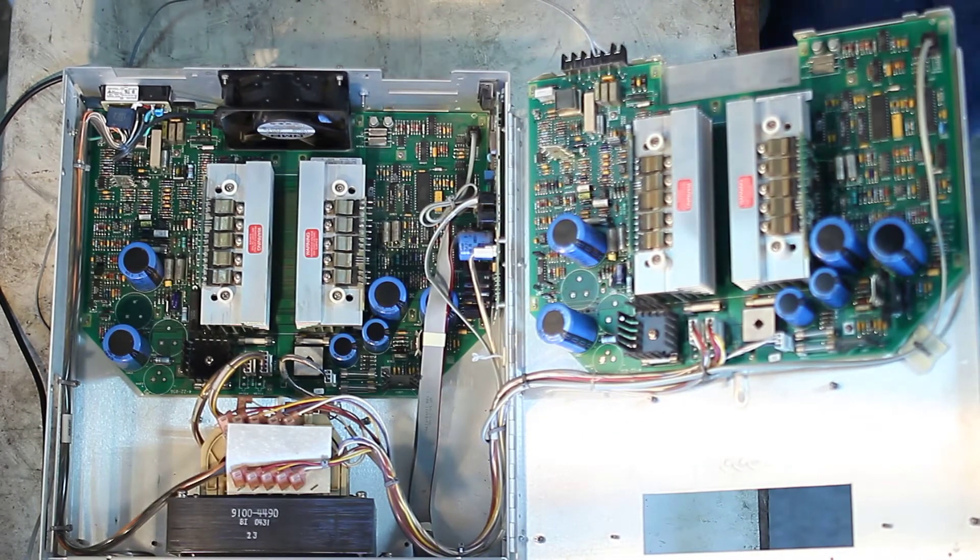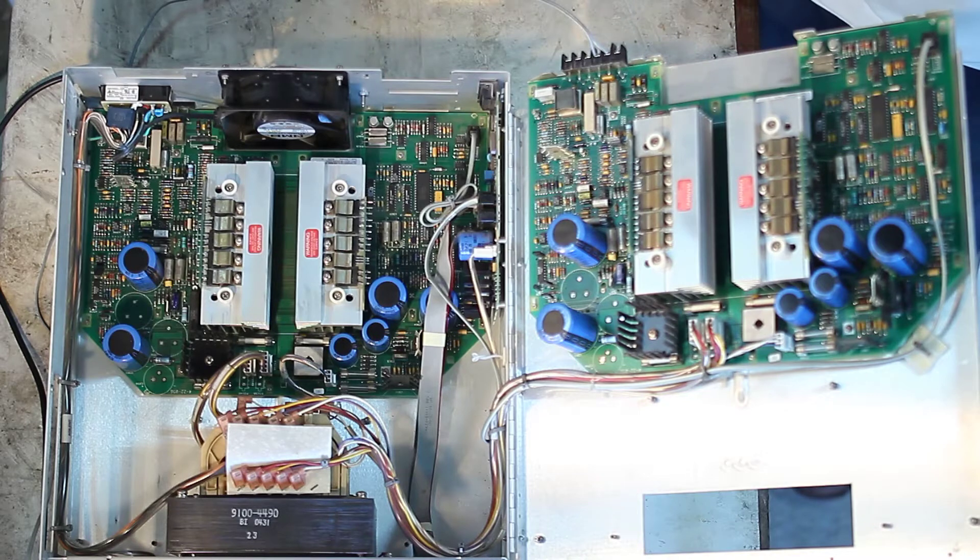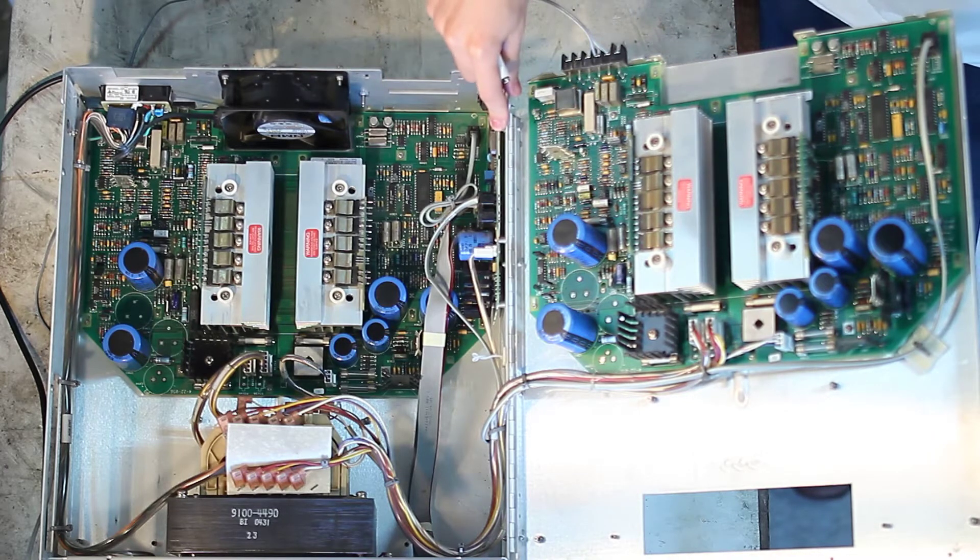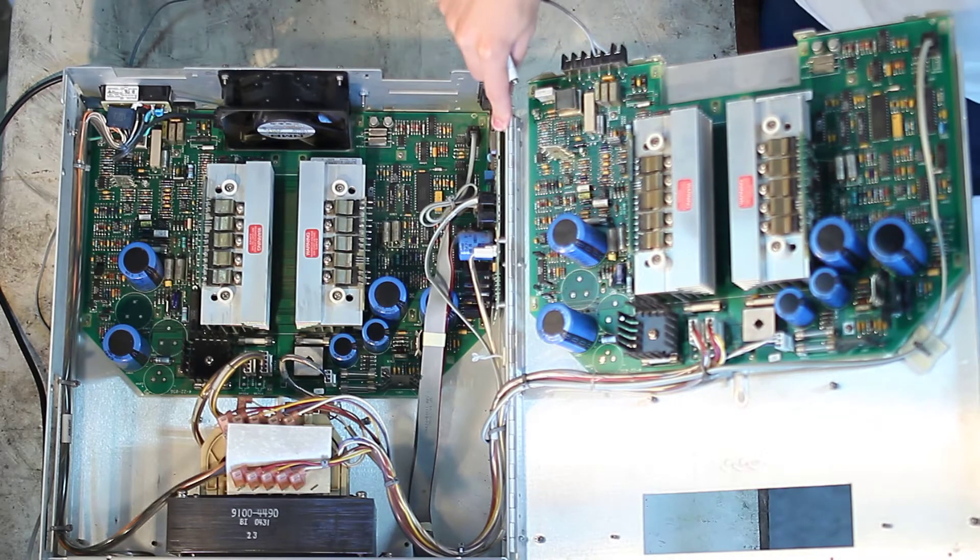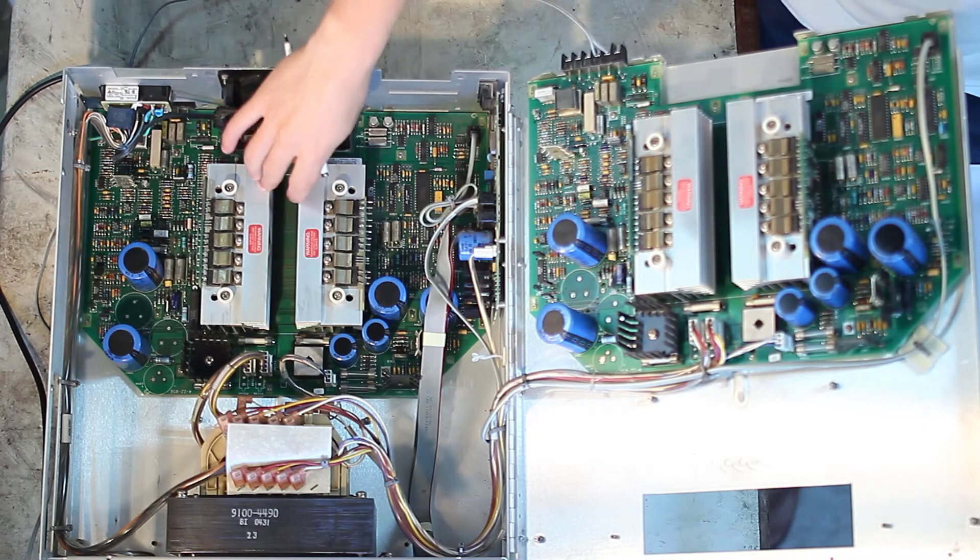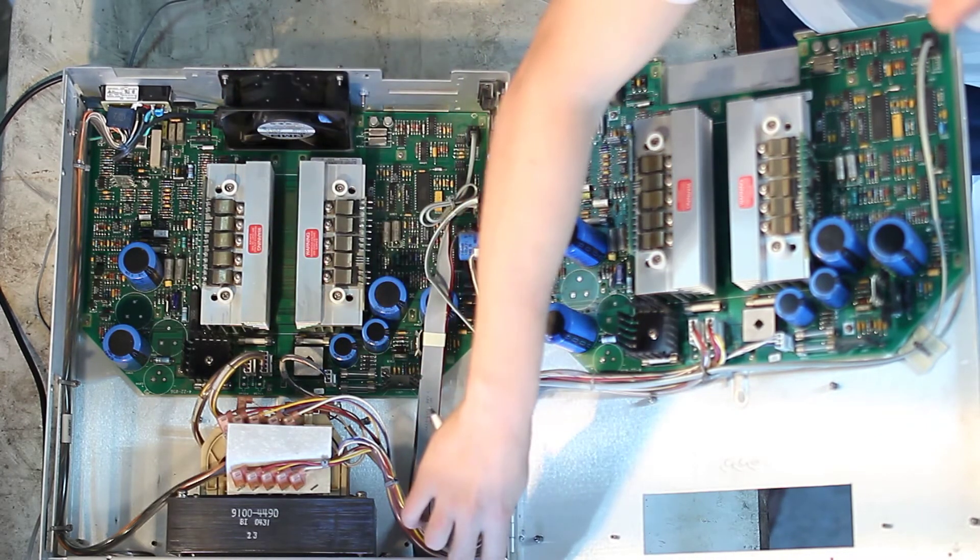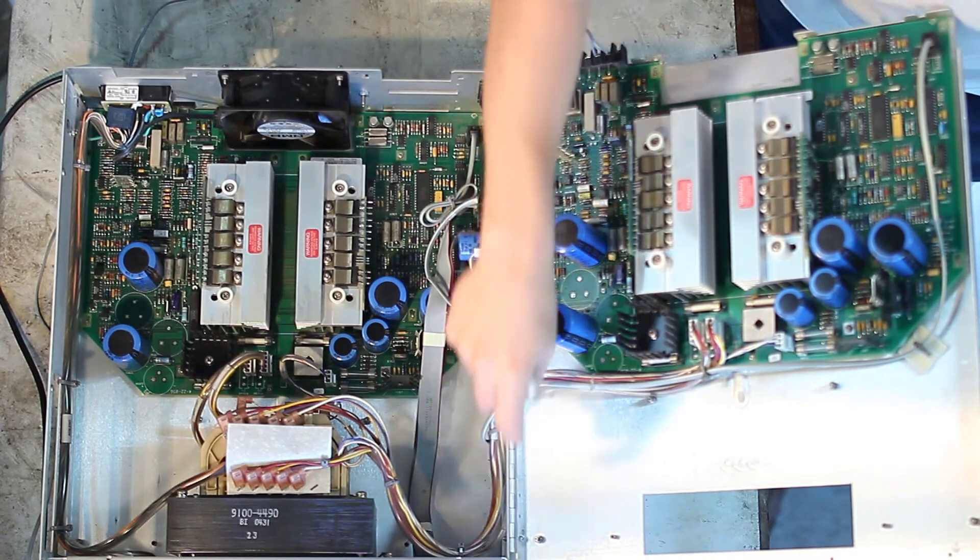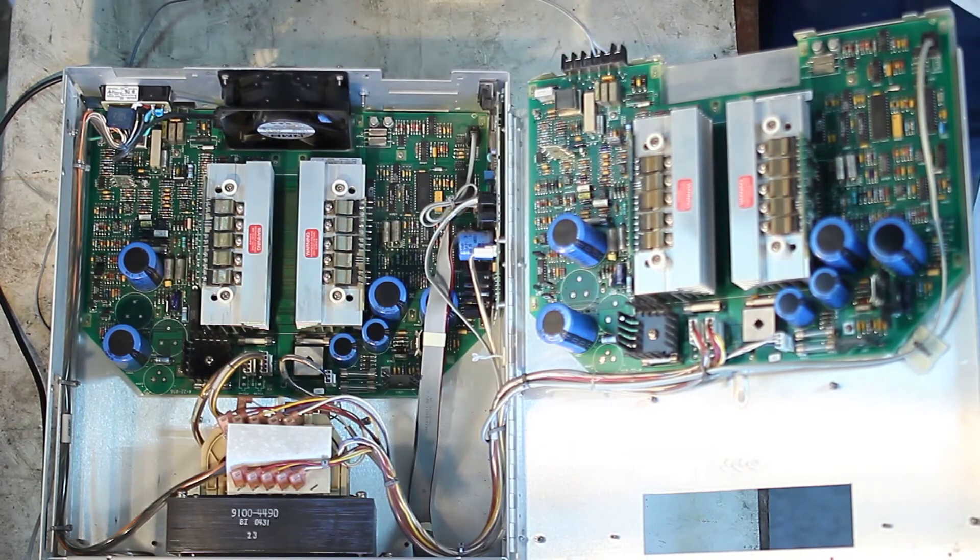The structure of the power supply is pretty simple. There's a control board, which includes the GPIB logic, two identical output boards, one for each channel, and a front panel board, which handles the keypad and the display, and, of course, the main transformer.